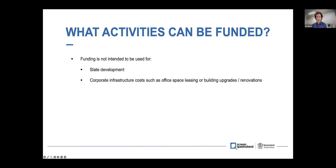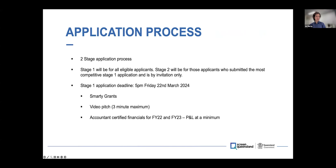Getting into the actual application process itself — it is a two-stage application process. Stage one is for everybody who meets those eligibility criteria. Stage two will only be for those who've submitted the most competitive stage one applications, and they'll be invited to progress to stage two. The deadline for stage one is by 5pm on Friday the 22nd of March. To meet that deadline you'll need to have filled out the SmartyGrants application in its entirety, submitted your three-minute video pitch, and provided those financial statements from your accountant. At a minimum we'll require the profit and loss; ideally the full financial pack for both financial years.